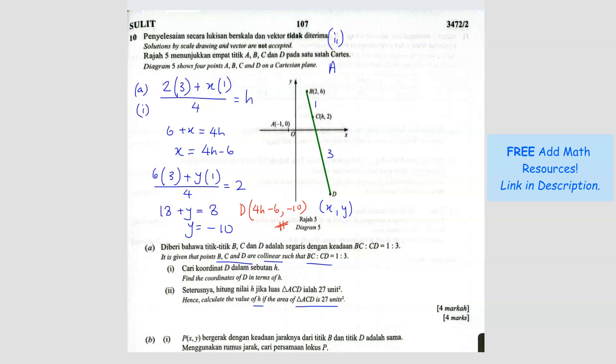So the formula is the area equals 1 over 2. And then we write the coordinate. So negative 1, 0. Then H, 2. And then 4H minus 6 and negative 10. And then write back the first one, negative 1, 0. This area is supposed to be equal to 27. So I'm going to bring the 1 over 2 to the left side. So I'll get double of 27, you get 54.